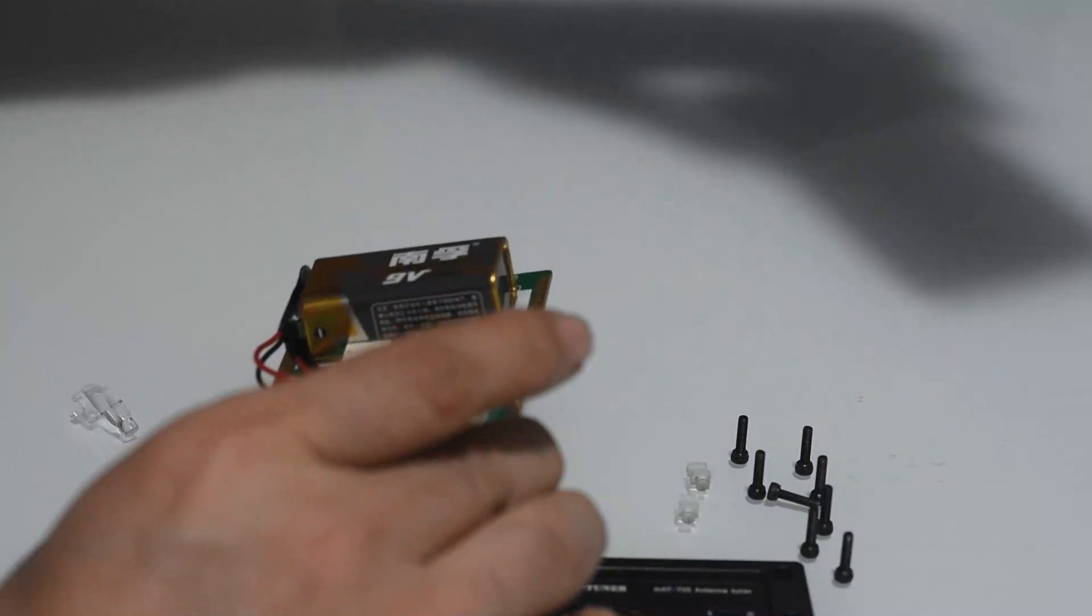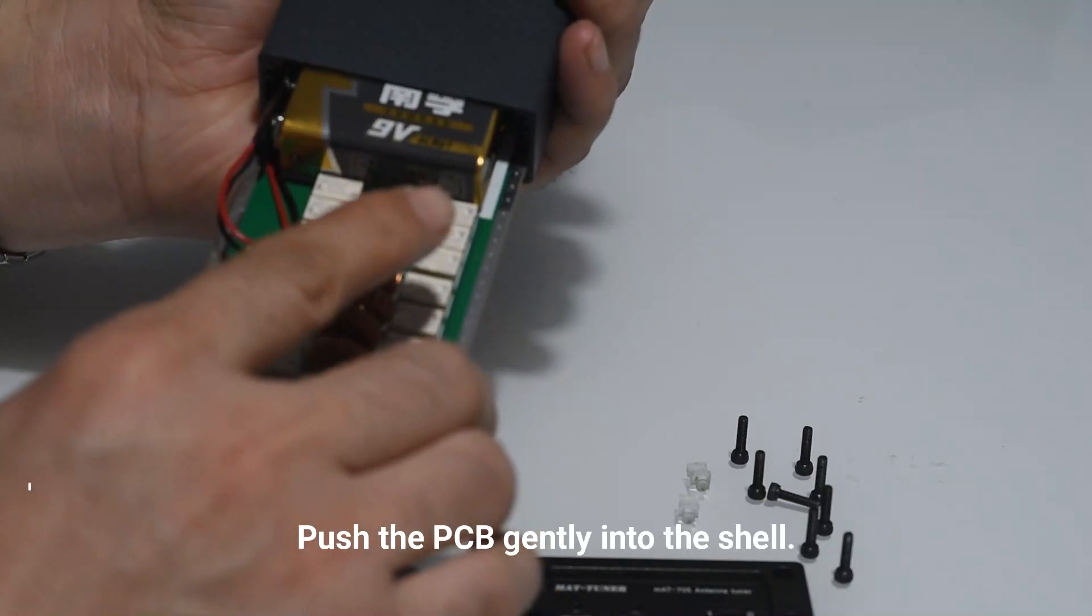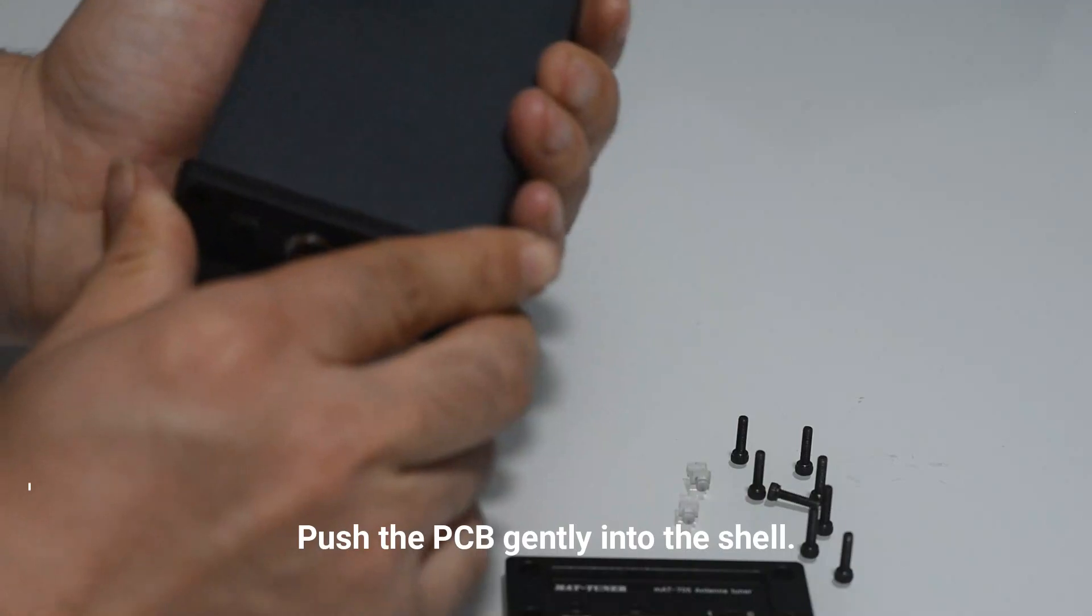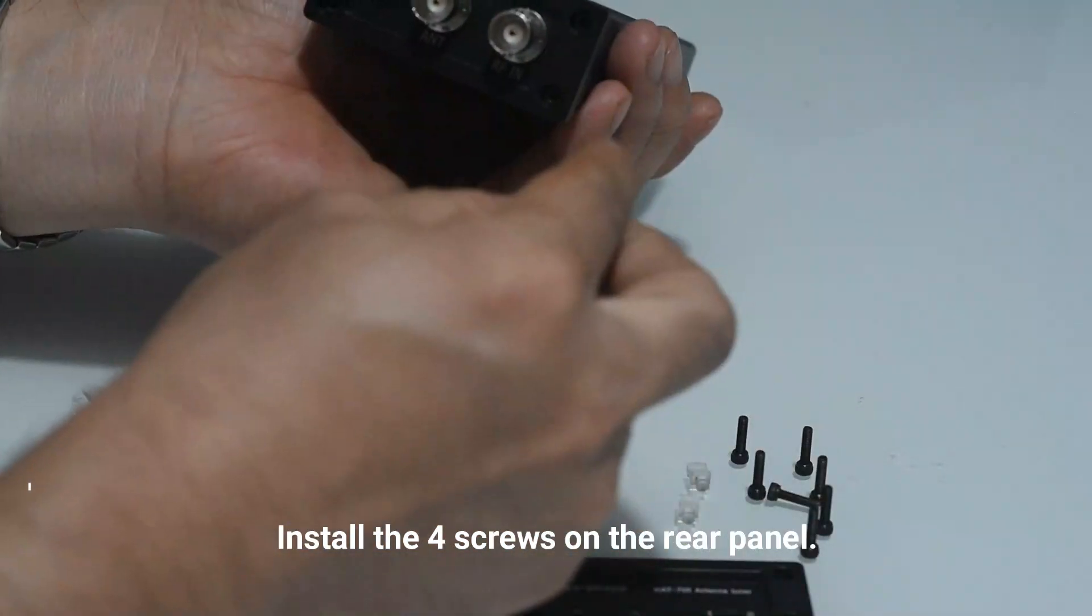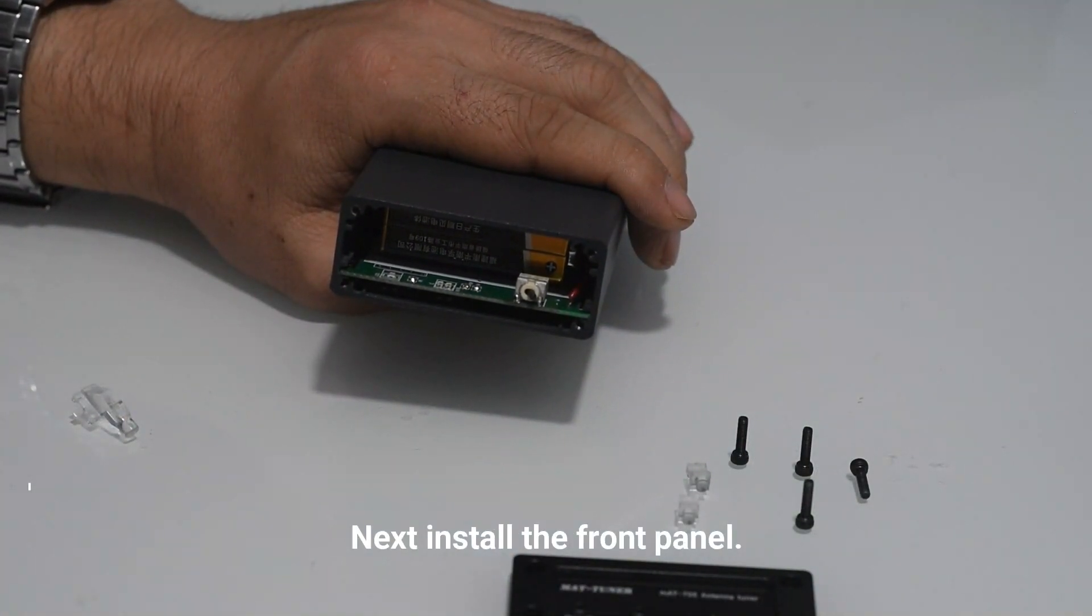Give it a squeeze down and then reinsert the PCB into the enclosure. At this point, you can reinstall the screws on the rear panel and then install the front panel.